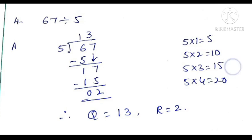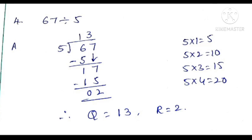See the table: 5 threes are 15, 5 fours are 20. Compared to 17, 20 is bigger. So we take 5 threes are 15. This 3 we write above the line, and this 15 we write below the 17. Then subtract: 17 minus 15 — 7 minus 5 is 2, 1 minus 1 is 0. Therefore the quotient is 13 and the remainder is 2.